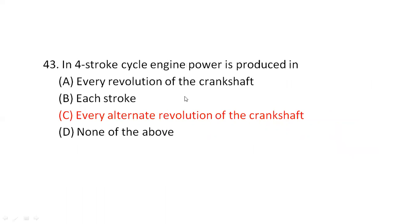In a four-stroke cycle engine, power is produced — option C — every alternate revolution of the crankshaft. Every alternate revolution of the crankshaft. Option C.